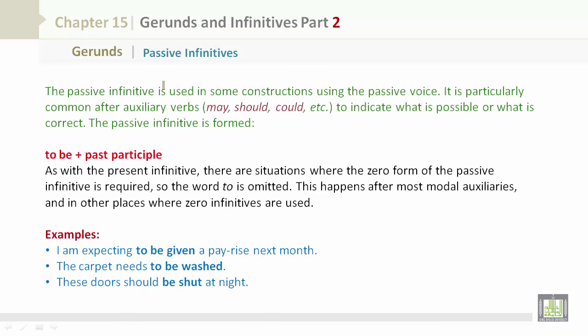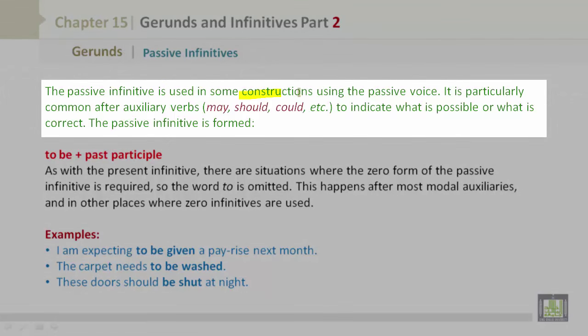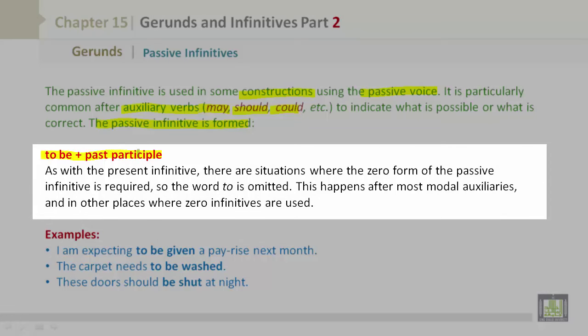Gerunds. Passive infinitives. The passive infinitive is used in some constructions using the passive voice. It is particularly common after auxiliary verbs such as may, should, or could, to indicate what is possible or what is correct. The passive infinitive is formed: to be plus past participle. As with the present infinitive, there are situations where the zero form of the passive infinitive is required, so the word to is omitted. This happens after most modal auxiliaries and in other places where zero infinitives are used.